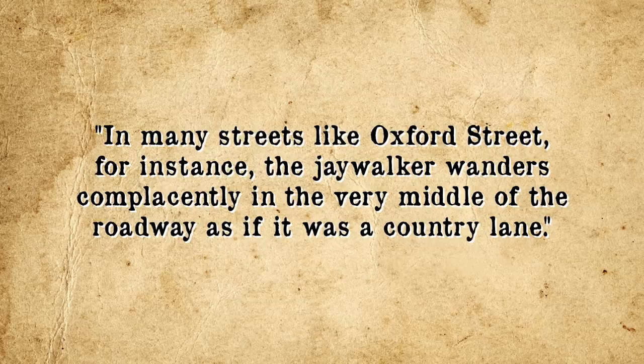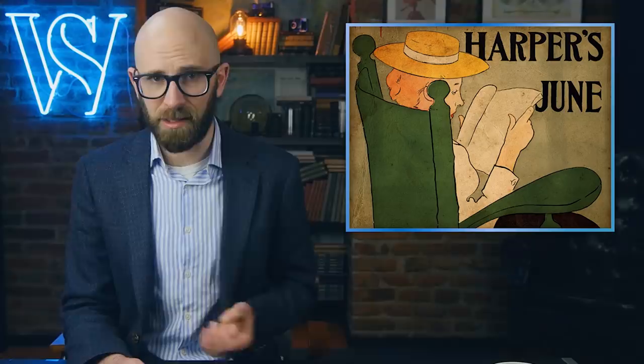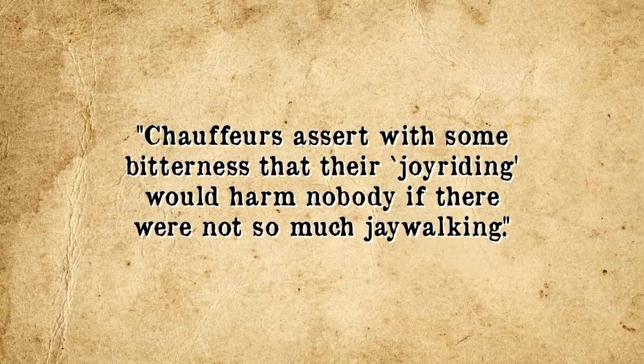As stated in the January 25, 1937 New York Times: 'In many streets like Oxford Street, the jaywalker wanders complacently in the very middle of the roadway as if it were a country lane.' Although the Oxford English Dictionary states the first known use of 'jaywalking' and 'jaywalker' was in the June 1917 edition of Harper's Magazine, the actual first known reference we could find was from a 1909 Chicago Tribune. The term was also mentioned in a 1915 New York Times article, where they stated they found the term 'jaywalking' highly shocking and truly opprobrious.